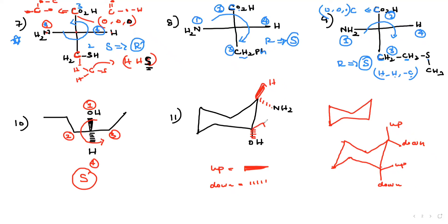Similarly, now do the numbering: one, two, three — very simple. Now start the numbering: confirm one in the item, in the carbon two, it is three, it is four. Do one, two, three — one, two, three, four. This is four, this is one — this is anti-clockwise, this is S. Fourth group noted.